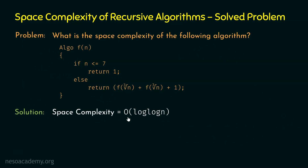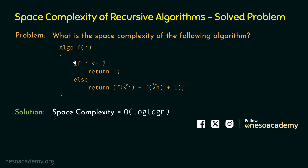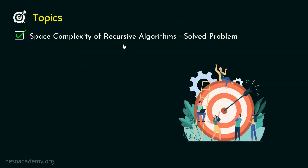I have written the worst case space complexity. The best case happens when the base case is satisfied for the first call. If n equals 7, then the base case is satisfied, there is only one stack entry, and the space complexity will be Ω(1). This is the best case space complexity. The worst case is O(log log n). With this, we have solved this problem successfully.